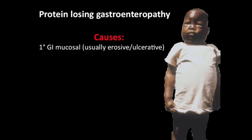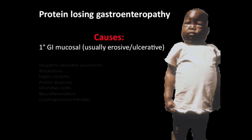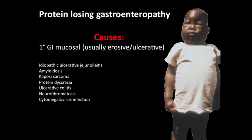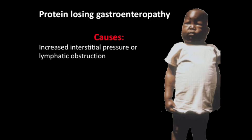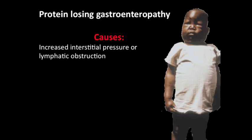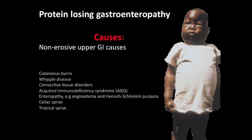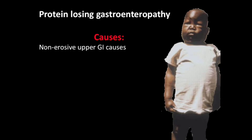There are numerous causes. First, we have primary GI mucosal causes — these are erosive and ulcerative conditions. You can see C. diff, membranous colitis, graft-versus-host disease, carcinoid, ulcerative colitis, amyloidosis, and CMV infection, among others. There are also increased interstitial pressure or lymphatic obstructive causes: TB, lymphoma, and Whipple disease, which is rare but can't be missed — so you need a biopsy for those. Even cardiac diseases can cause enteropathies. There are also non-erosive upper GI causes: Whipple disease again, celiac and tropical sprues, AIDS, and a few others.